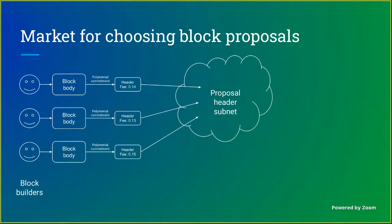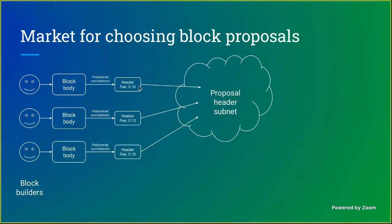This is the proposal for a market for choosing block proposals. There's a class of actor called block builders. Block builders propose block bodies — think of the block body as just a lump of data. It has no meaning within the protocol itself, but rollups can refer to it. Rollups can make proofs showing that a piece of data is available because it was published in a shard block. From the block body you can compute a polynomial commitment, which goes into a header. The header contains a commitment of the block body, a signature from the block builder, and a number representing the fee the block builder is willing to pay. Headers are at most around 100 bytes, and they get published into a special peer-to-peer network called the proposal header subnet.